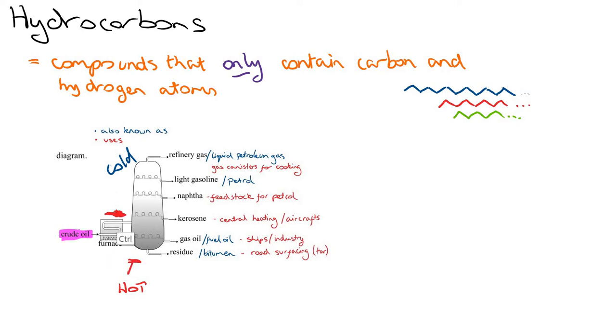And as the vapors enter into the column, they start to rise up. So the vapors will continue to rise up until a point at which it's reached its boiling point. So if the temperature that it reaches is below its boiling point, that vapor will now cool down into a liquid and condense off.